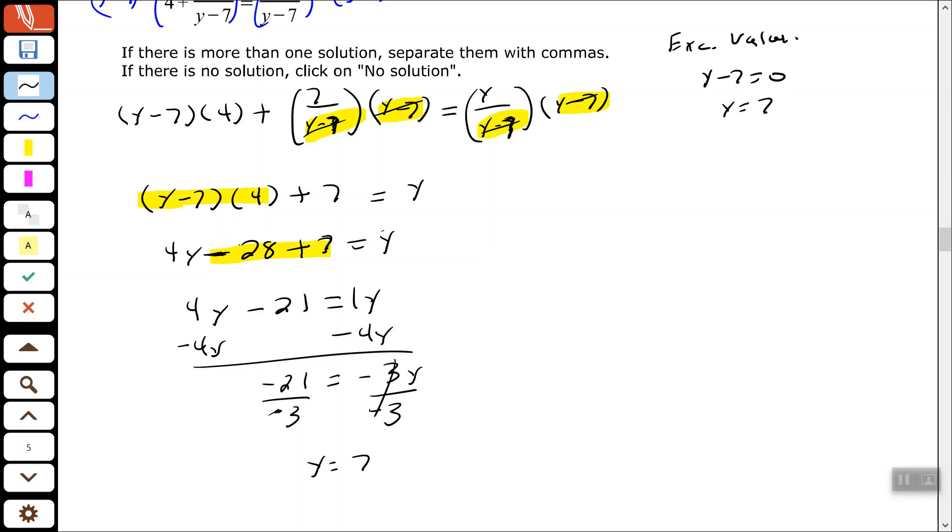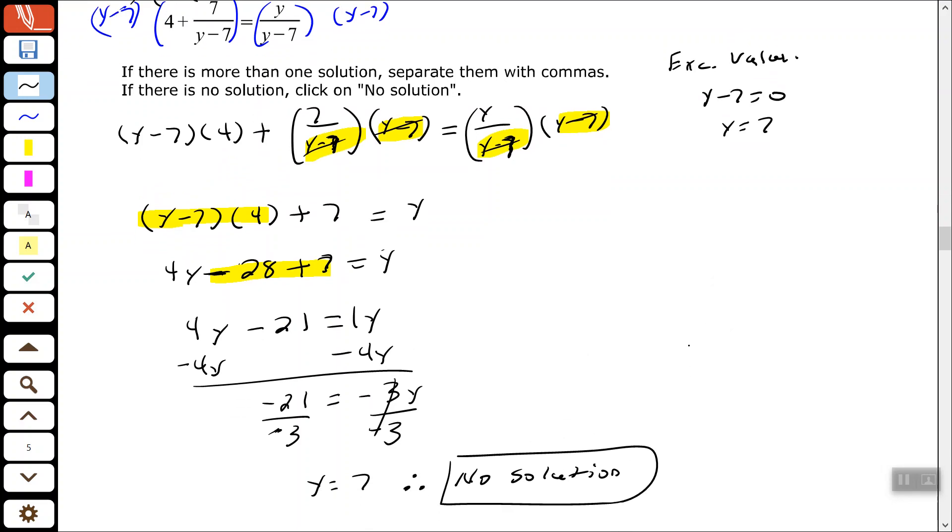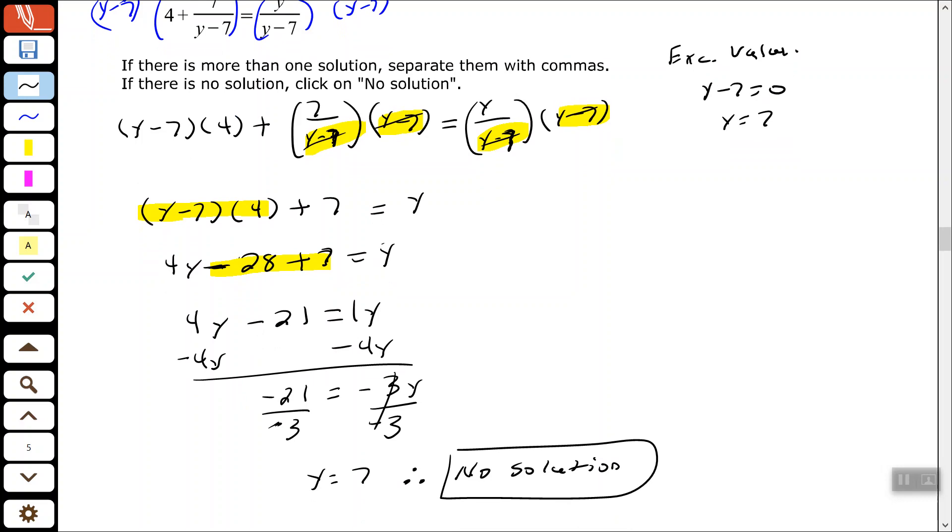That was the only number that y could not be equal to for it to be a valid solution. Therefore, my answer would be no solution. And again, the reason for that is if I were to take that 7 and replace y in either one of those y's in my original equation, I would have 7 minus 7. I would have 0 in my denominator, which would make that undefined. So my answer there would be no solution.